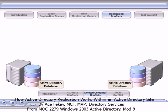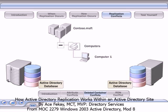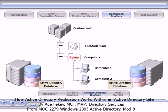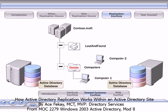A deleted container conflict occurs when one replica records the deletion of a container object, while another replica records the placement of an object in that container or in a subordinate container. When this conflict occurs, the object is moved to a special container called Lost and Found, and the container is deleted.